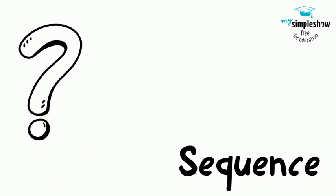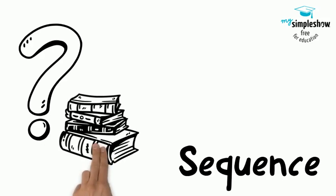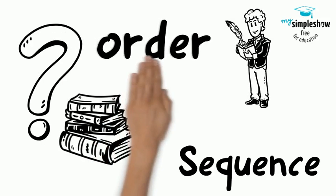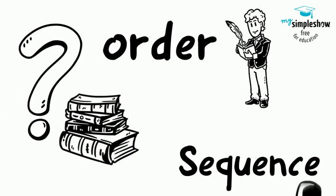Any words that tell when something happens are sequence words. When you read these types of words in books, the author wants you to know that the order in which things happen is important.